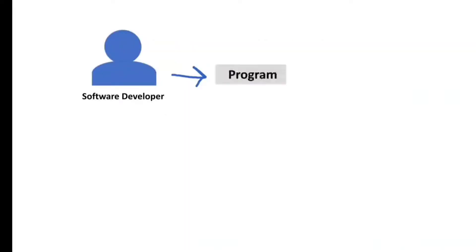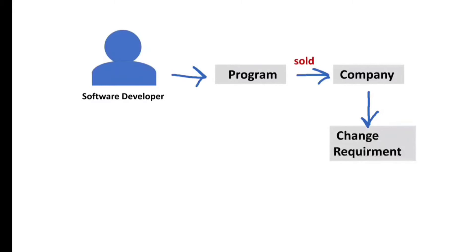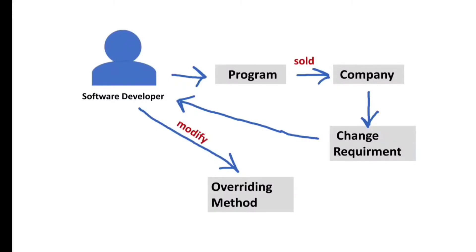Imagine you are a software developer and you develop a mathematics program that prints all even numbers, and you sold your program to a specific company. The program works well, but after some days the company's requirement changed — now they want to print all odd numbers instead of even numbers. In this situation, the overriding method will do magic for you. You just need to modify the overriding method instead of modifying the whole entire code of the program. You can put your logic in the overriding method without touching the rest of the code.